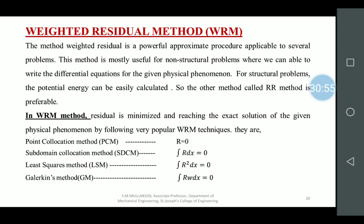Weighted residual methods — the WRM method. There are different types: it is a powerful approximate solution that can bring you closer to the real value and considerably reduce residual values. For structural problems, the potential energy can be easily calculated, so the Rayleigh-Ritz method is preferred. In WRM, the methods include: point collocation method, where the residual R is equated directly to zero to find the unknowns.